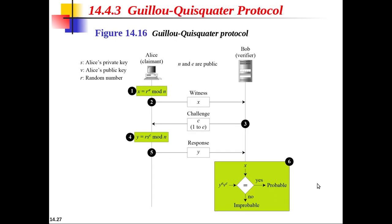The third protocol, Guillou-Quisquater, is an extension of the first protocol in which fewer rounds can be used to prove the identity of the claimant. Similarly, two large prime numbers p and q are chosen to calculate n = p × q. The trusted party also chooses an exponent e which is co-prime with φ(n), where φ(n) = (p−1)(q−1). Here n and e are public, while v is public and s is private. The relation v × s^e ≡ 1 mod n holds. These steps are repeated several times with a random challenge c between 1 and e, and the claimant must pass the test in each round.